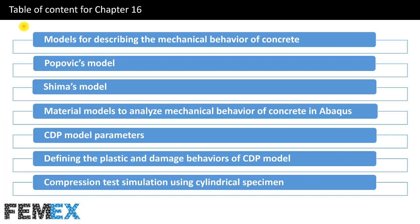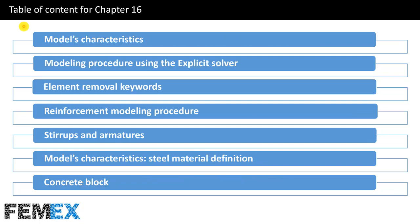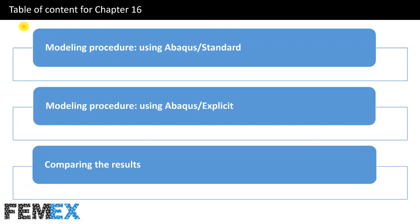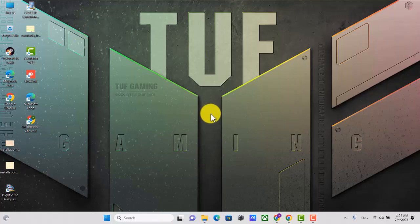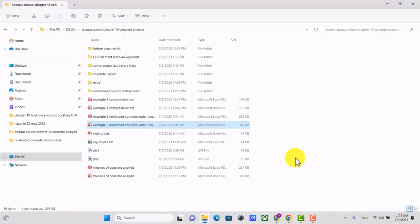This is the table of contents for Chapter 16. In this session, I want to explain Chapter 16, which is about concrete analysis. In structural engineering, we have two main materials: steel and concrete. We also have FRPs and some other materials, but the most important two are concrete and steel.